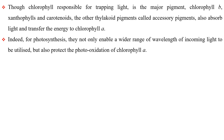Though chlorophyll is the major pigment responsible for trapping light, chlorophyll B, xanthophylls, carotenoids, and other thylakoid pigments called accessory pigments also absorb light and transfer the energy to chlorophyll A. Indeed, they not only enable a wider range of wavelengths of incoming light to be utilized for photosynthesis but also protect the photo-oxidation of chlorophyll A.